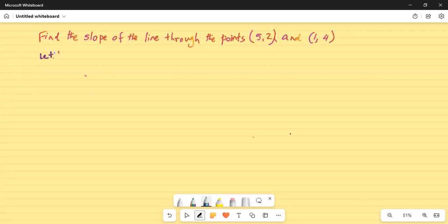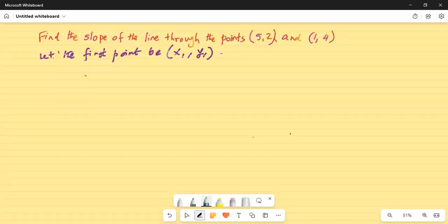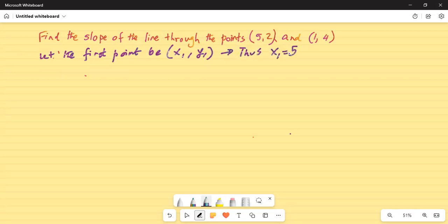Let the first point be (x1, y1). Thus, x1 is 5 and y1 equal to 2.